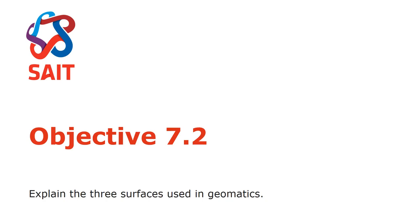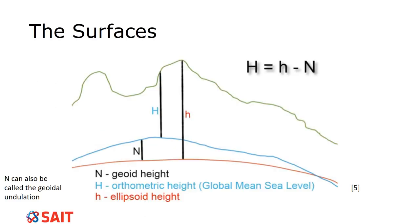Objective 7.2. Three surfaces used in geomatics. There are three surfaces, just like there are three norths. Everything comes in threes in this class. Here are the surfaces.